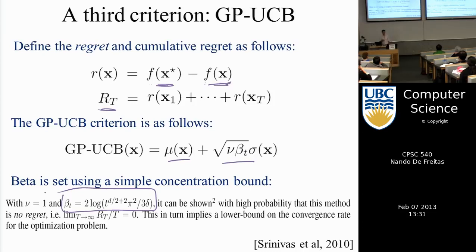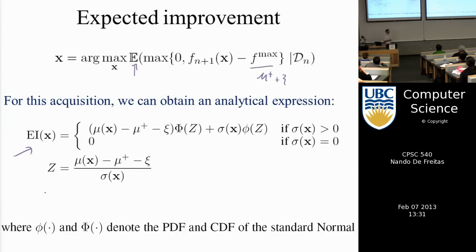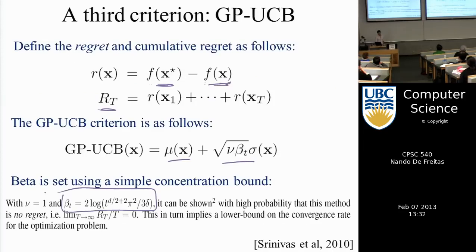Proving this takes several pages, which I won't go over here. But in practice this criterion — upper confidence bound — is very easy to implement, whereas the expected improvement integral was the easy-to-prove one. I might give deriving the EI integral as a homework exercise. If the set of points is not infinite but you know the horizon, you get a different value of beta, which requires quite a bit of theory.